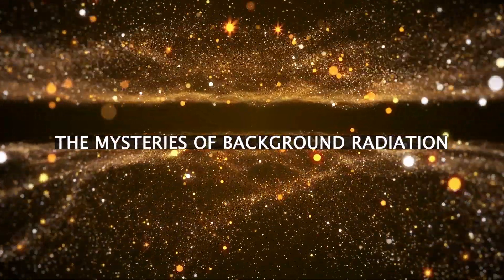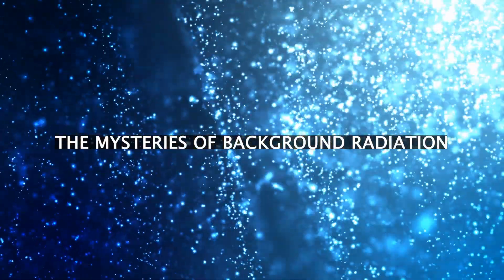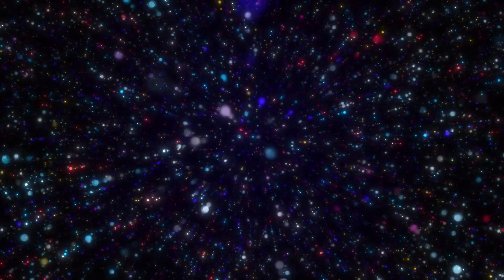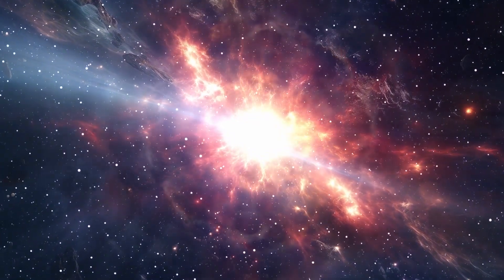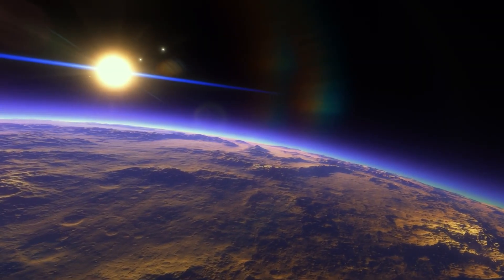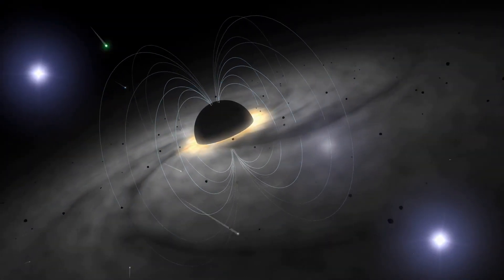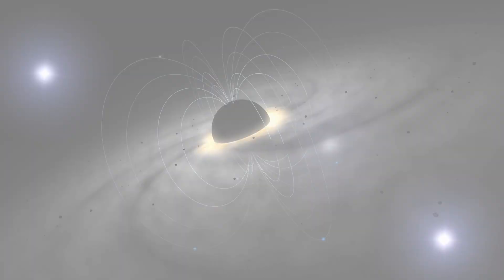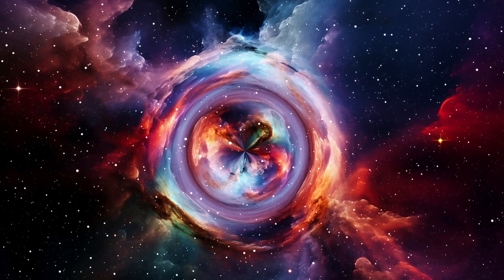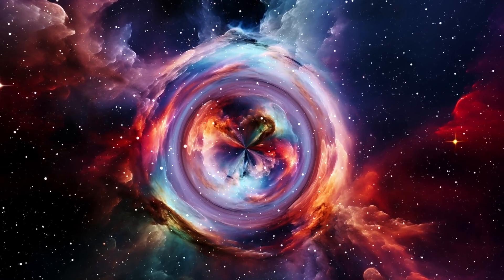The Mysteries of Background Radiation. The background radiation we detect today is like a snapshot of the universe's early days, taken around 380,000 years post-Big Bang. At that time, the cosmos started emitting light, although it was a slow process. This radiation doesn't allow us to see all the way back to the Big Bang itself. But it's a crucial piece in piecing together the puzzle of our universe's infancy.